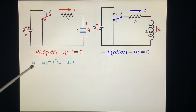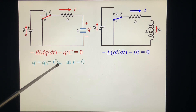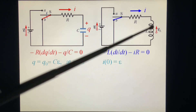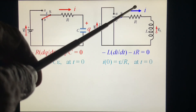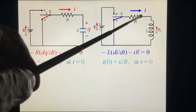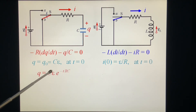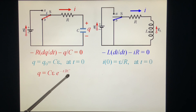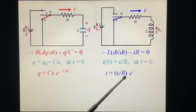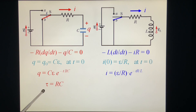We know the answer. Q at T equals 0 is C·epsilon — it was already charged. Before switching, the current was epsilon/R with no voltage drop, because the inductor's resistance is very small, almost 0. So Q equals C·epsilon times e to the minus T over RC, and for the R-L case, I equals (epsilon/R) times e to the minus T over (L/R). The time constant tau equals RC or L/R respectively.